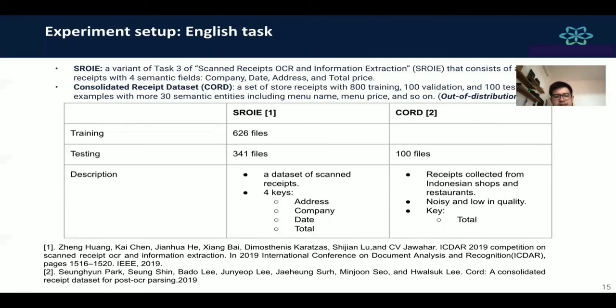In SROIE, the task is to extract four keys in documents, which are address, company, date, and total. With the CORD dataset, we only use it for testing with 100 files. It is receipt data collected from Indonesian shops and restaurants. In this CORD dataset, we need to identify the total key.